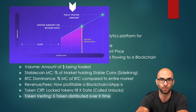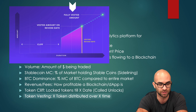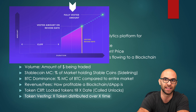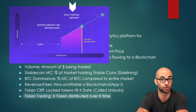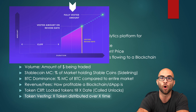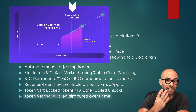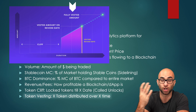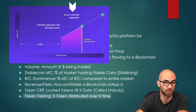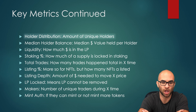For example, you might have 100,000 tokens. They say they're going to distribute this over a 10-month period linearly. So 10 months, 100,000 tokens — that's 10,000 tokens per month.